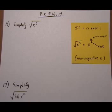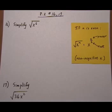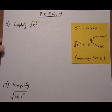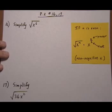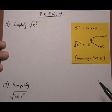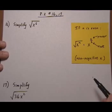We're on 8.2, number 16 to 17, and we're probably going to fit in a couple more also. Now we're going to do some more square roots. This time they're going to have variables under the radical, but we're not doing cube roots yet. We'll leave that for the next video clip.